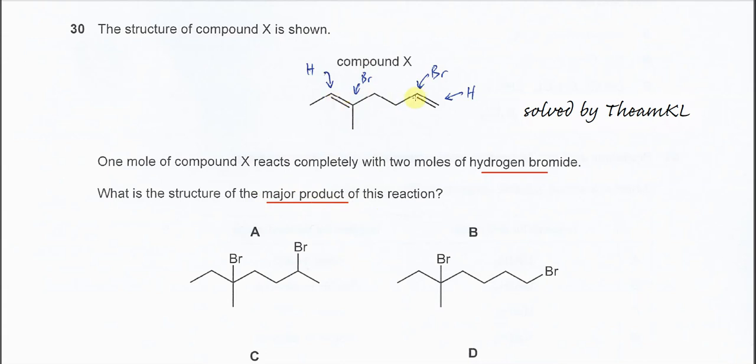And this CC double bond will react with the HBr here. And HBr will undergo electrophilic addition. If we follow the Markovnikov rules, whenever HBr is added to a CC double bond, the hydrogen will first add to the carbon with more hydrogen.